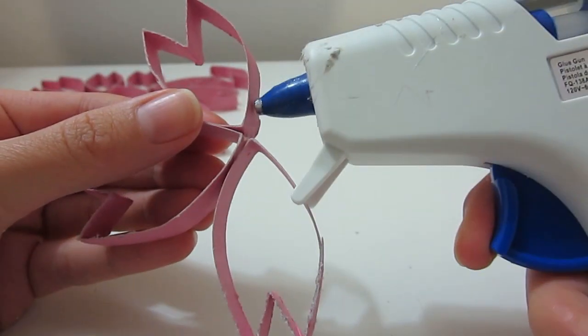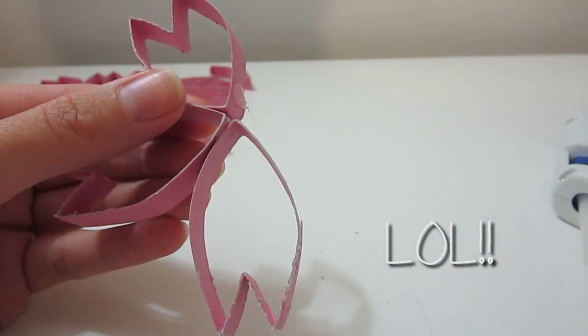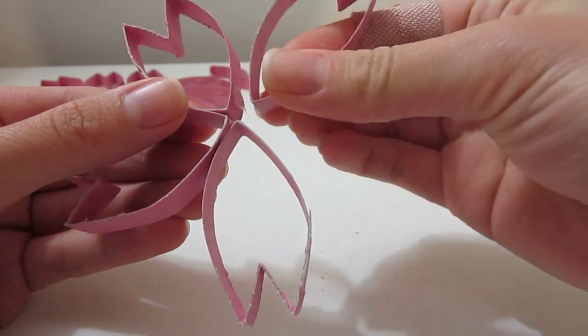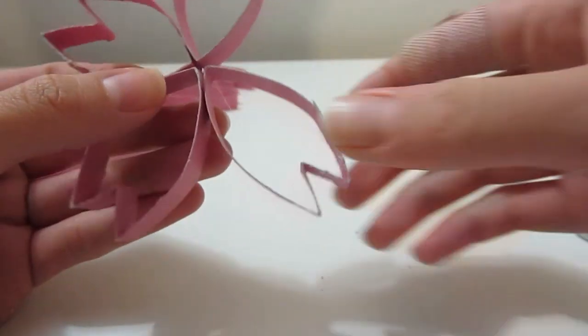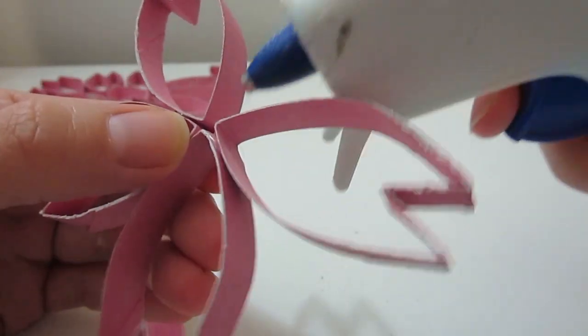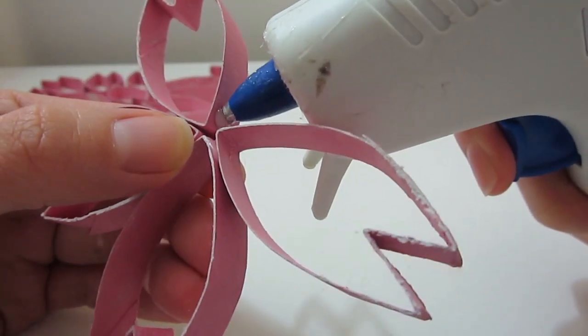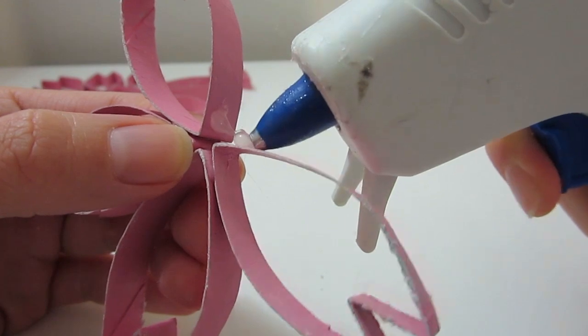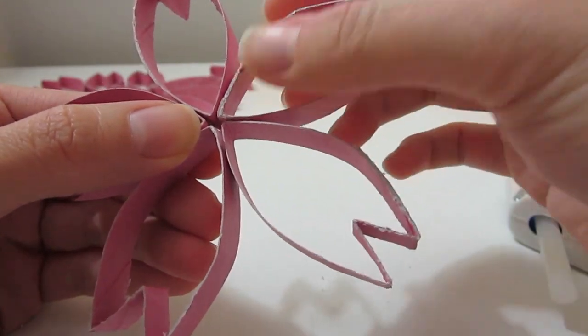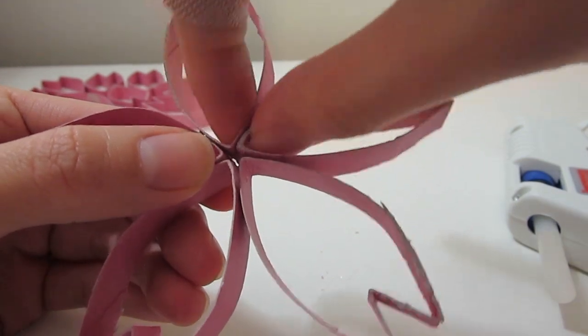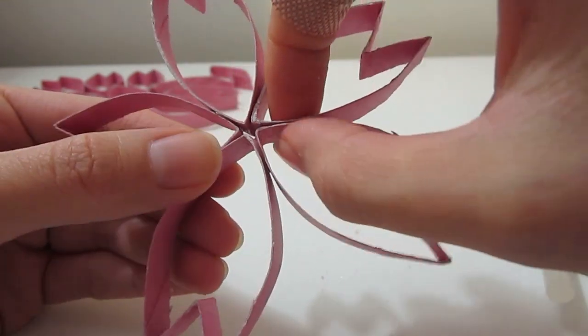But you can make mutant ones if you want. Before placing the fifth petal, remember to squeeze a dab of glue onto both sides and there you have your cherry blossom.